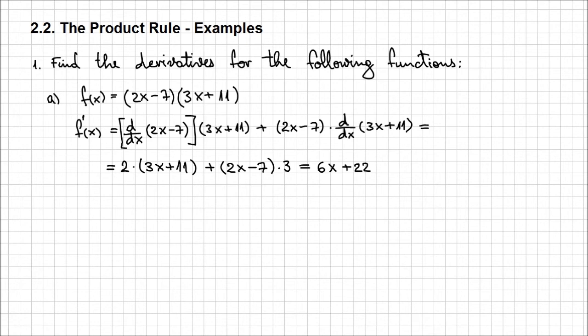Simplifying: we get 6x + 22 + 6x - 21, and adding the like terms gives 12x + 1. So you see, the product rule can be applied very easily and it turns out to be very simple.